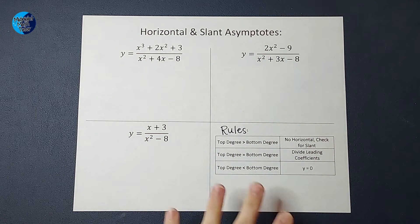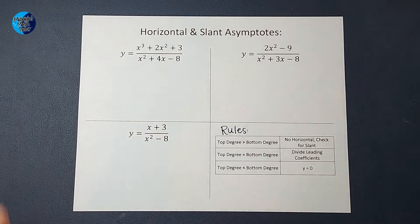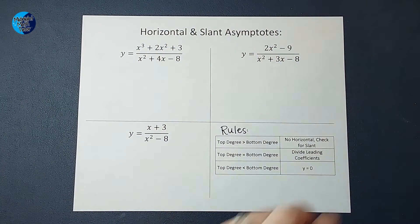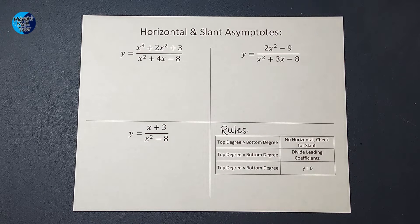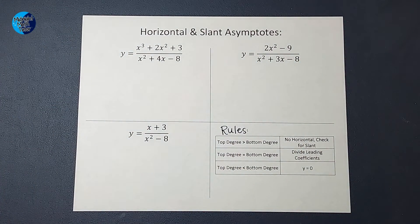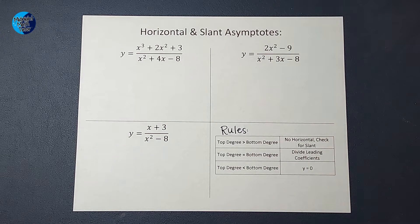So these are our rules. It has to do with the degrees: if the top is bigger than the bottom, if they're equal, or if the bottom is bigger than the top — it means different things for my horizontal asymptote or my slant asymptote. As you can see, all of these are division problems. So when I actually divide these, it tells me something about the shape of my graph, in the form of horizontal and slant asymptotes.